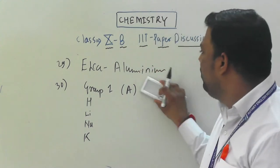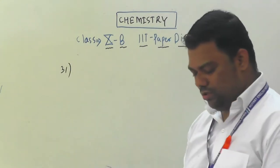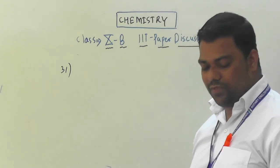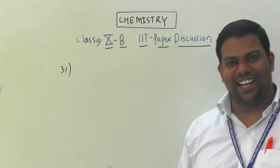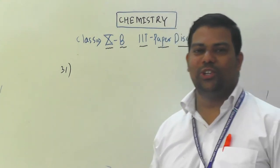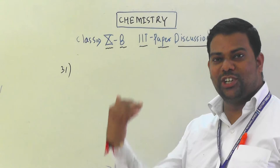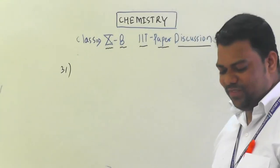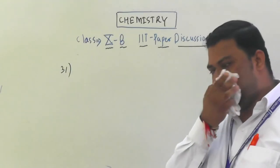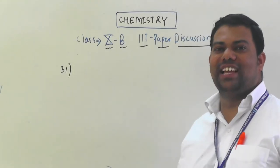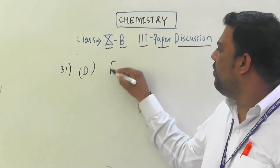Question number 31: down the group, which property decreases? Metallic character — no, it increases down the group. Atomic radius — also increases down the group. Number of shells — also increases. Electronegativity — yes, it decreases down the group. The most electronegative element, fluorine, is at the top of Group 17. So electronegativity decreases down the group, and option D is correct.